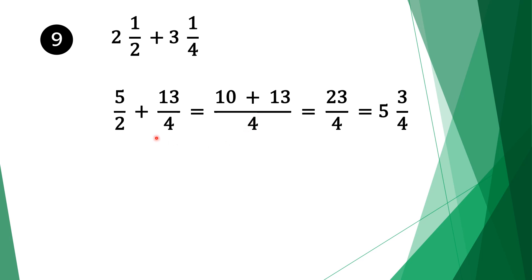4 divided by 2 is 2, 2 times 5 is 10. Move along the plus sign. Do the same for the second fraction: 4 divided by 4 is 1, 1 times 13 is 13. We add 10 and 13 which is 23, and bring the denominator 4. Our result is 23 over 4. Since it's an improper fraction, our final solution is 5 and 3 quarters.